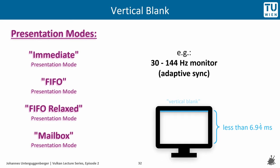Let us consider a monitor which supports adaptive sync — this includes monitors promoted by Nvidia as G-Sync and by AMD as FreeSync. The general term is adaptive sync, and it means that the time interval between vertical blanks is not fixed but adaptive. Our monitor here supports an adaptive update range between 30 Hz and 144 Hz. Also in this case, the image to be transferred to the monitor may only be swapped during these vertical blanks if tearing shall be avoided.